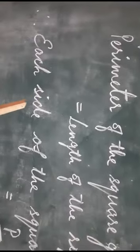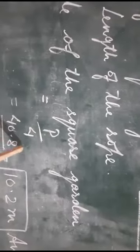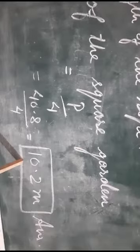Question number 7, the side of the square is equal to perimeter divided by 4. So the perimeter is given, you divide it by 4, then you will get 10.2 meters.